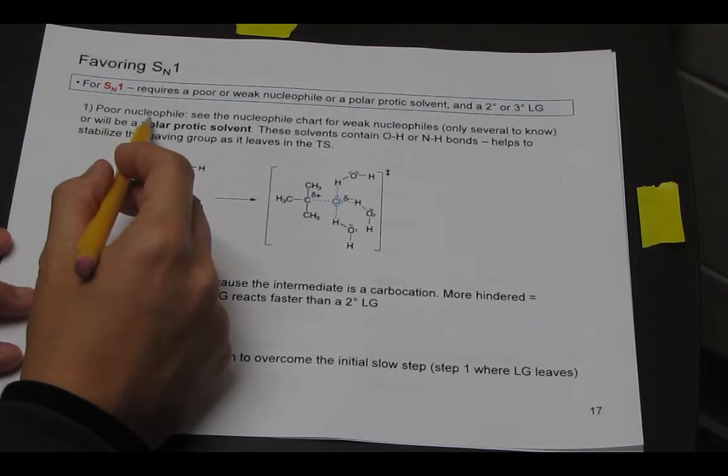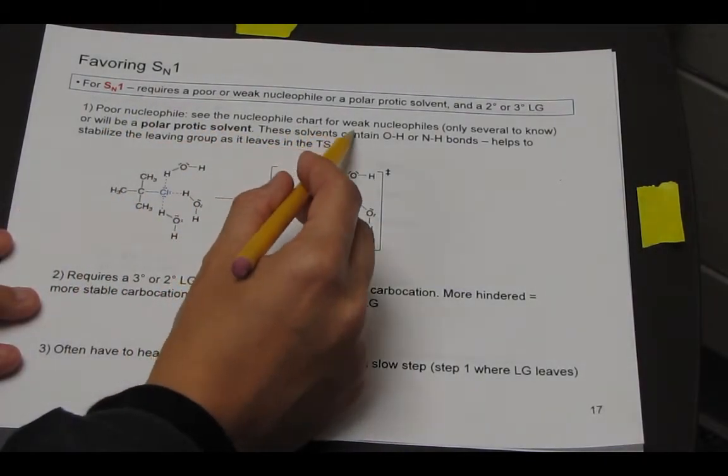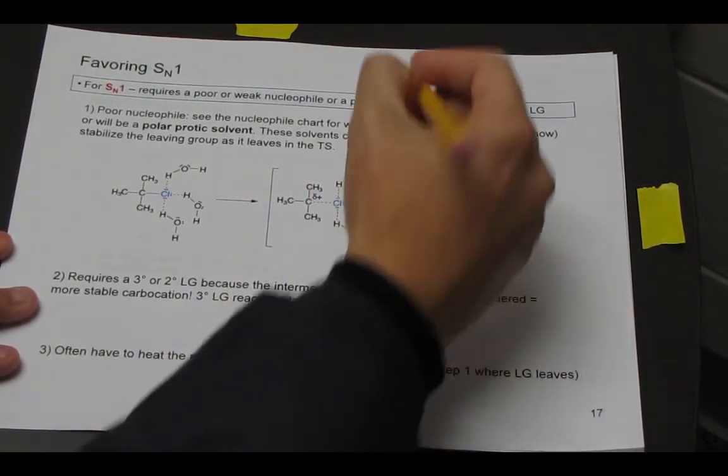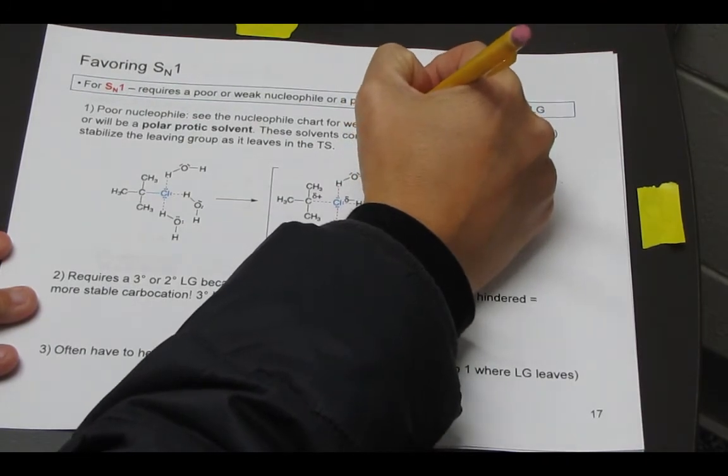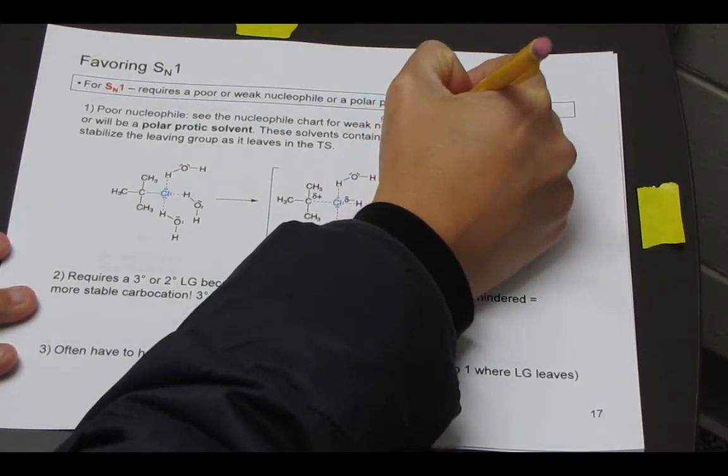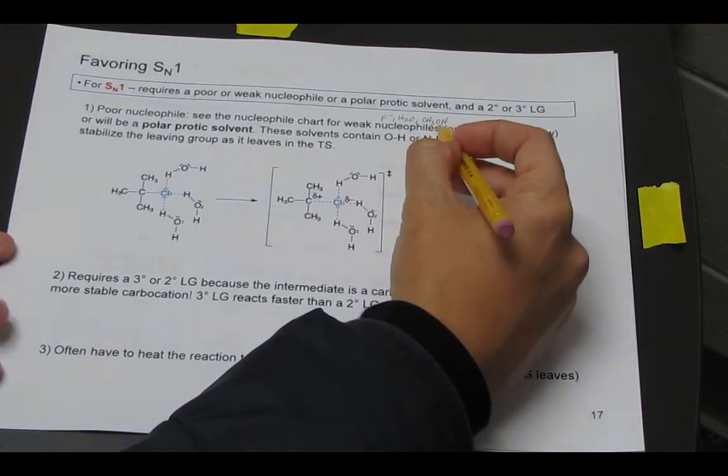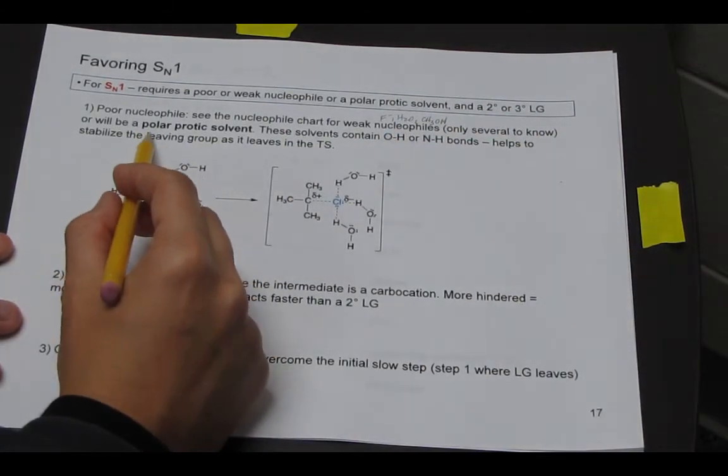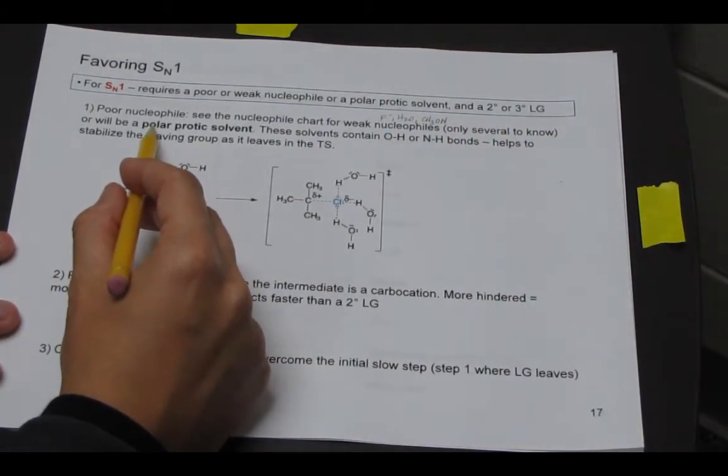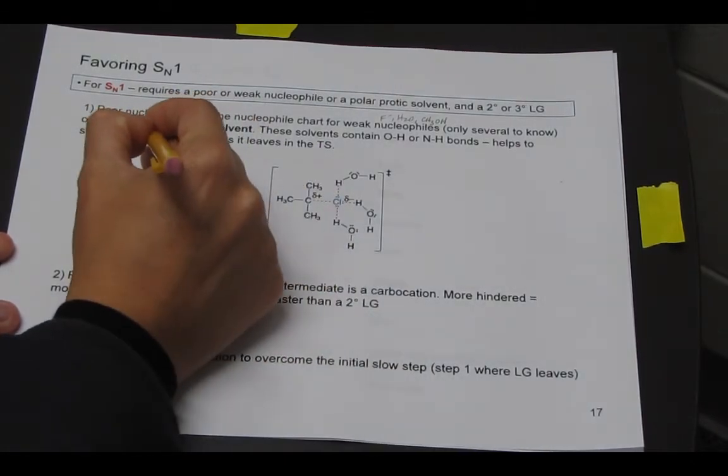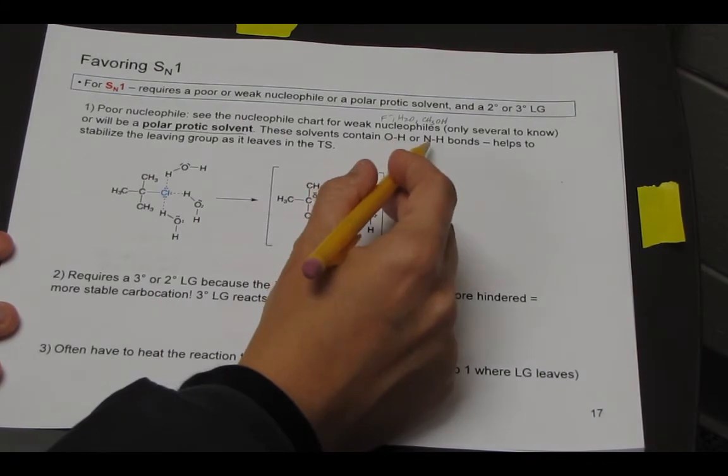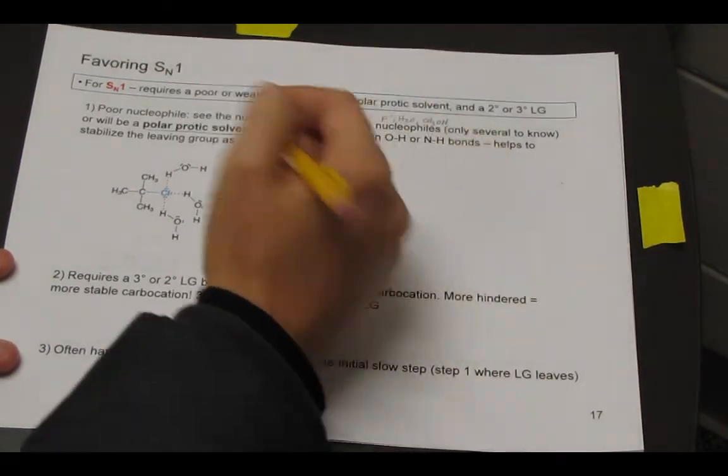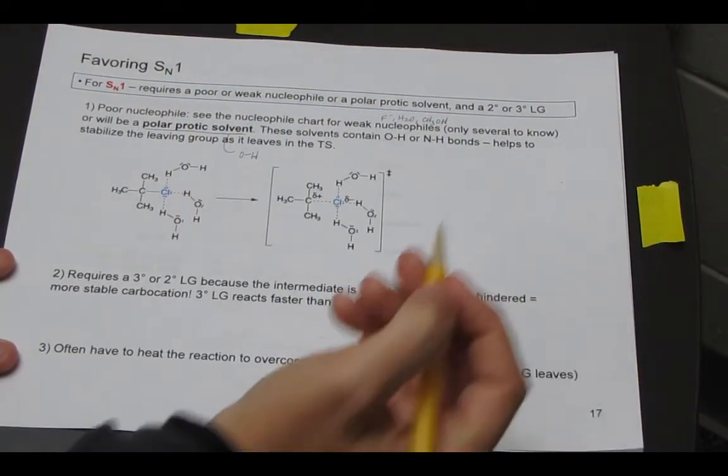So in terms of a poor nucleophile, if you look back on your nucleophile chart, we only have three that fall under weak nucleophiles. And so they were F-, H2O, and then methanol was one of them. But it could be any solvent that's alcohol here. This can be any R group. In general, your nucleophile is your solvent, which is called a polar protic solvent. And in general, polar protic means you have OH or NH. But we're just going to focus on the OH, as you see in these solvents here.